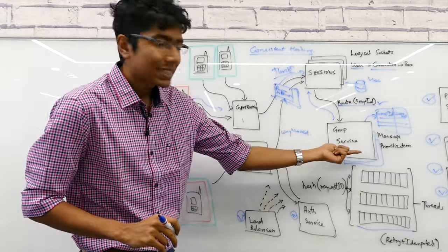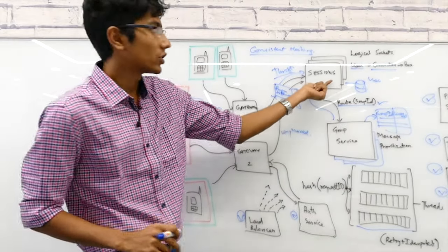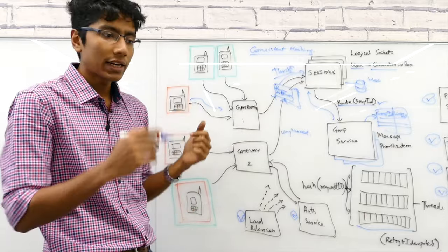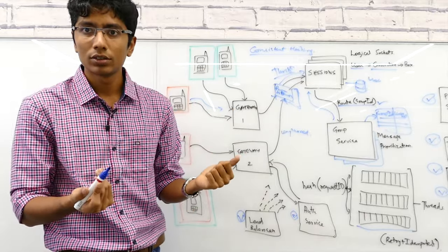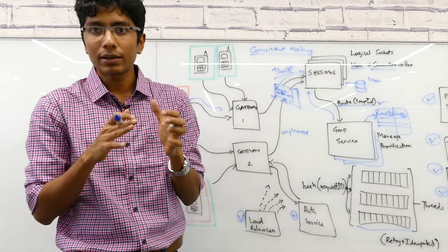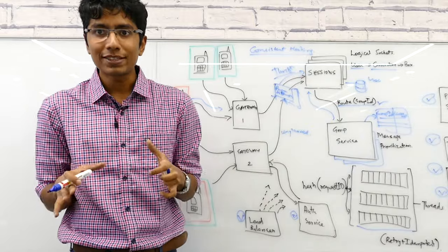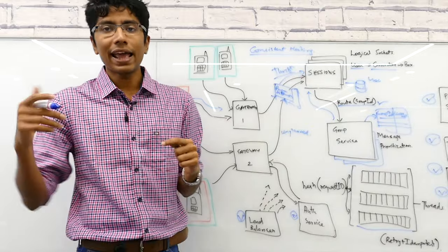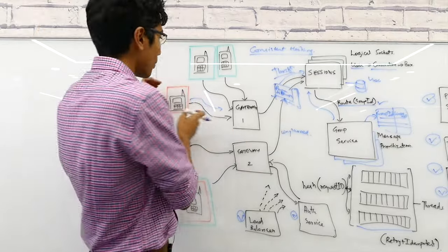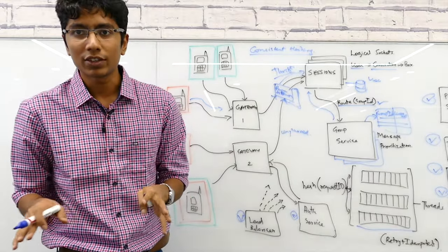When the group service gets the message, it sends a response saying it received it. Sessions then sends a response to the gateway, and the user who sent the original message gets a sent tick mark. Group receipts for delivered or seen are expensive — everyone in the group needs to acknowledge receipt and then it all has to come back to the original sender. Many chat applications don't even implement that, so we won't cover it here.